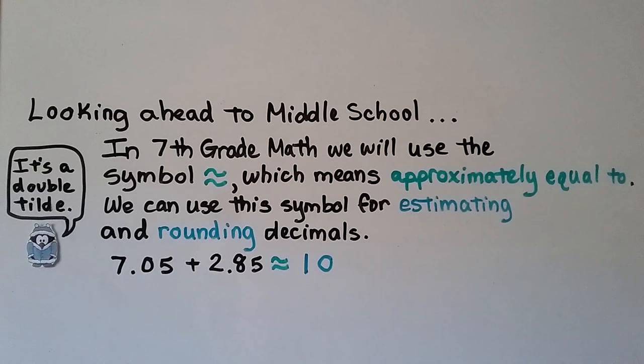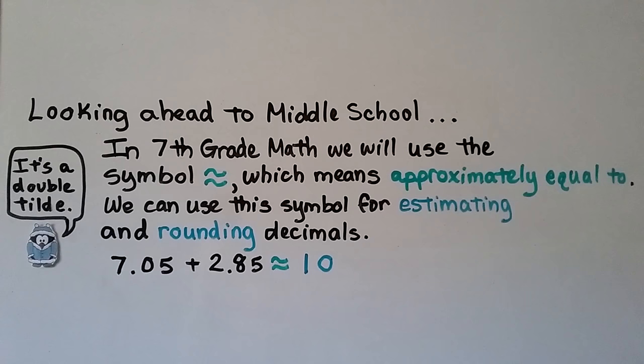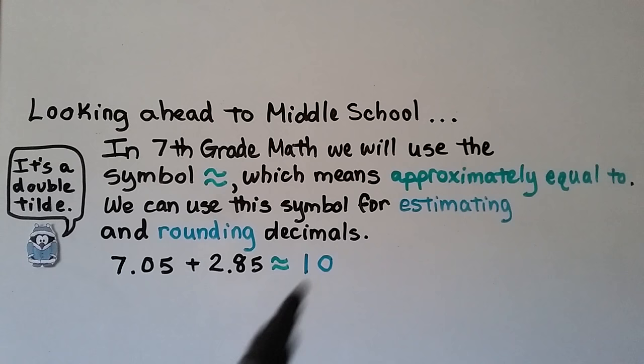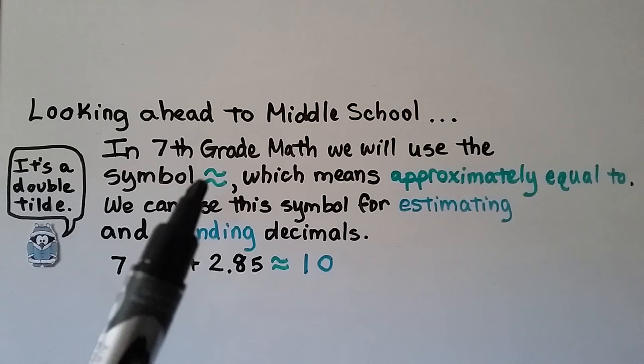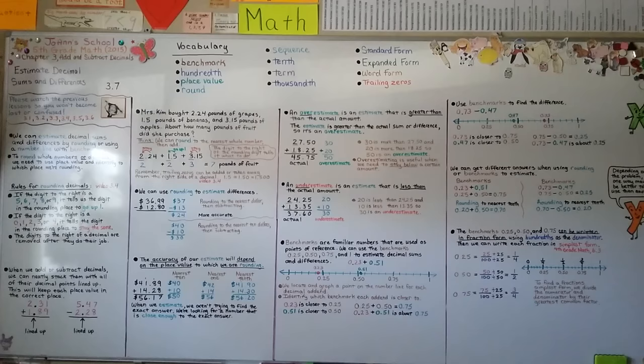Looking ahead to middle school — in seventh grade math, we'll use the approximately equal to symbol (≈). We can use this symbol for estimating and rounding decimals. For example, this 0 tells the 7 to stay the same, and this 8 tells the 2 to round up to 3, so 7 plus 3 is approximately equal to 10. The single wavy line is a tilde; two wavy lines make a double tilde meaning approximately equal to. Some students may use this symbol as early as fifth or sixth grade depending on their school.